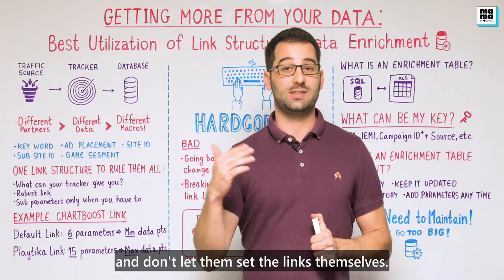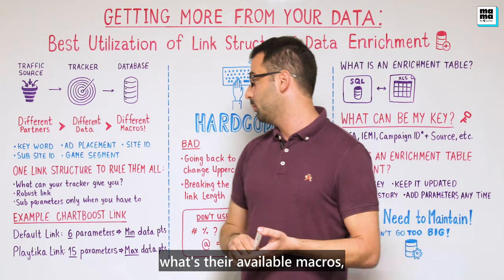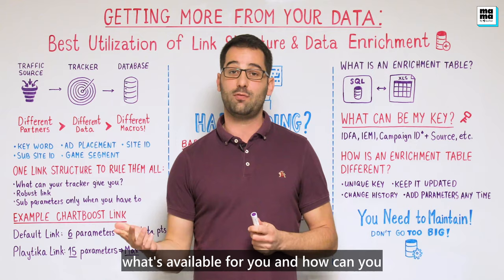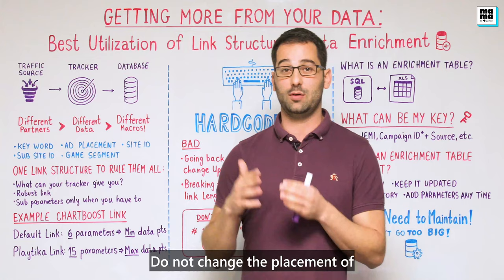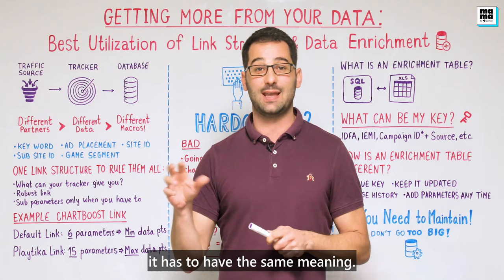One of the most important things is to actually talk to your partners and try to understand what macros are available. When you have the available macros, remember that different partners will have macros for keywords, placements, site IDs, etc. It's important to understand what's available and how to put it into the links correctly. Do not change the placement of specific macros between links — it doesn't have to have the same name, it has to have the same meaning.